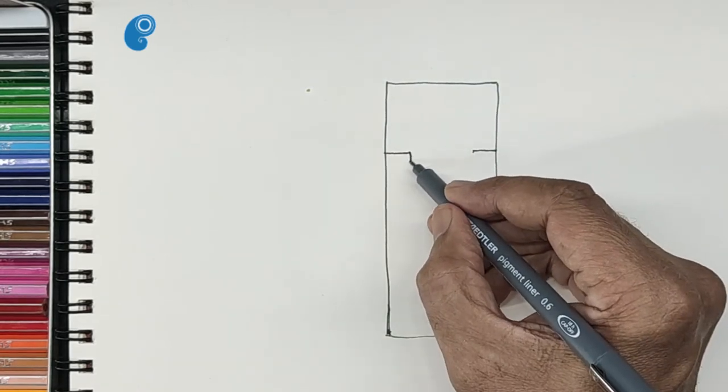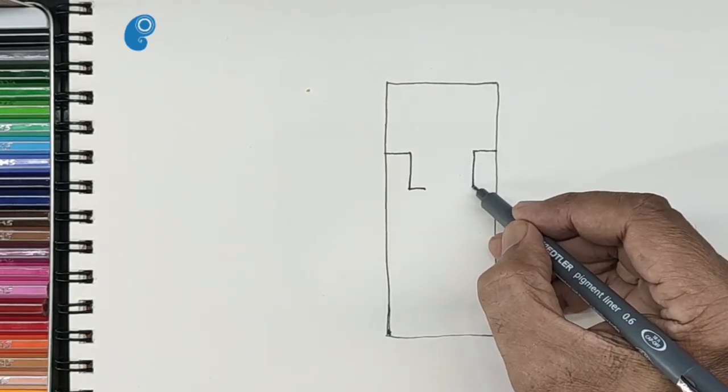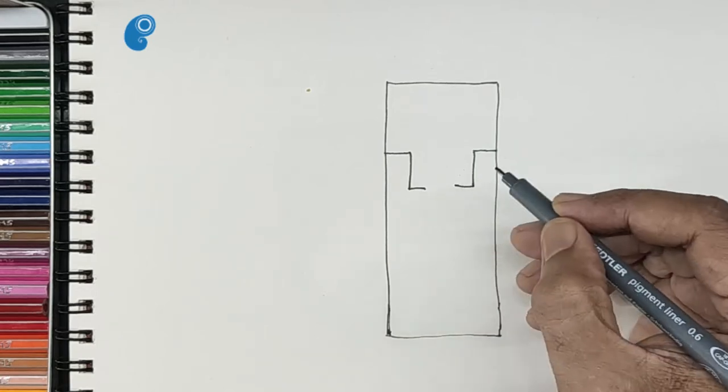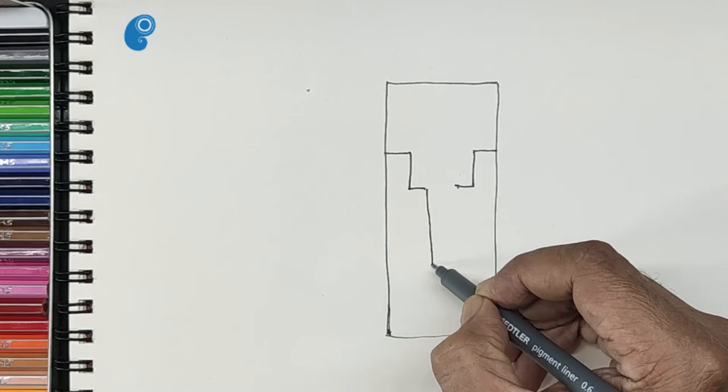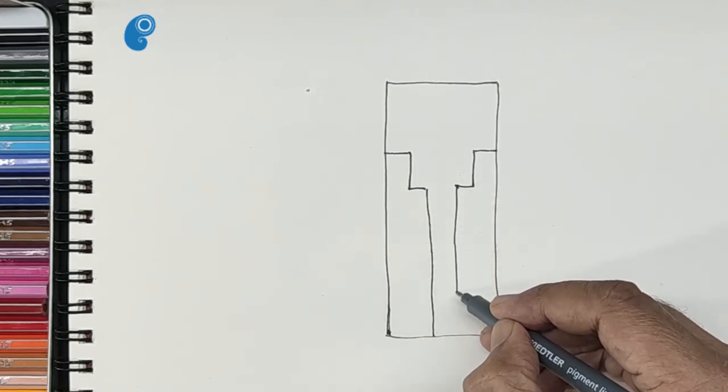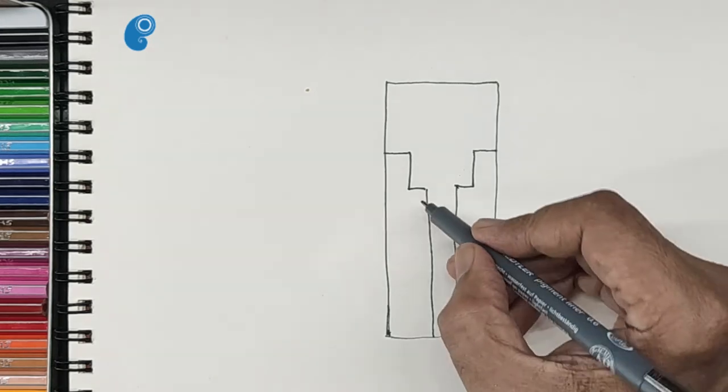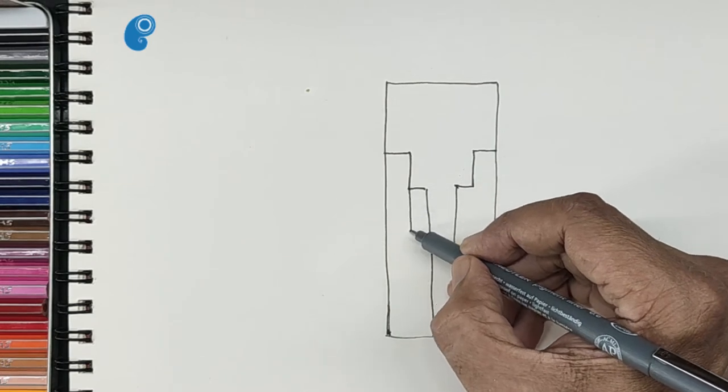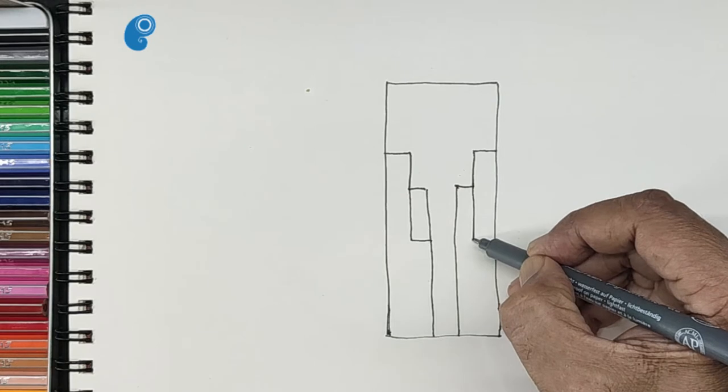Let us do another cut which will form the top of the tusks. Let us draw two vertical lines downwards like this which will form the trunk. We will cut two rectangles here on either side of the trunk for the tusks.